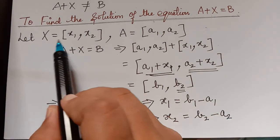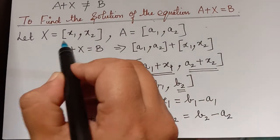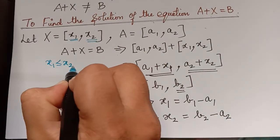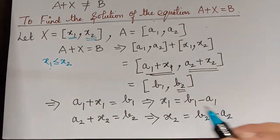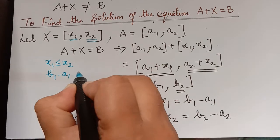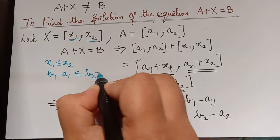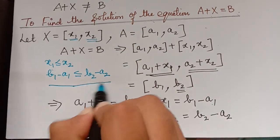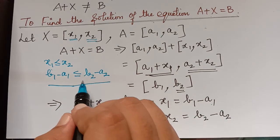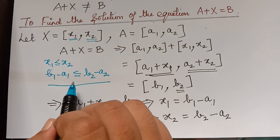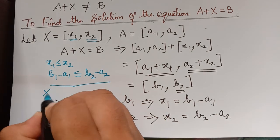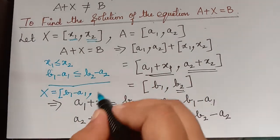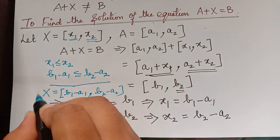Since X must be a valid interval, it is required that x1 ≤ x2. Therefore, b1 - a1 ≤ b2 - a2 must hold. The equation has a solution if and only if this condition is satisfied, and the solution is X = [b1 - a1, b2 - a2].